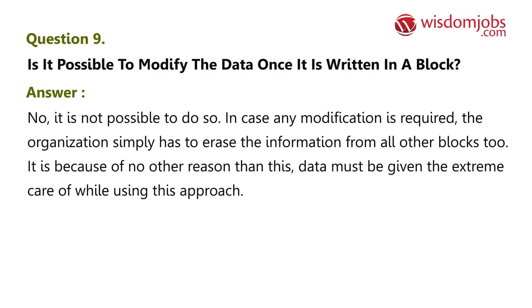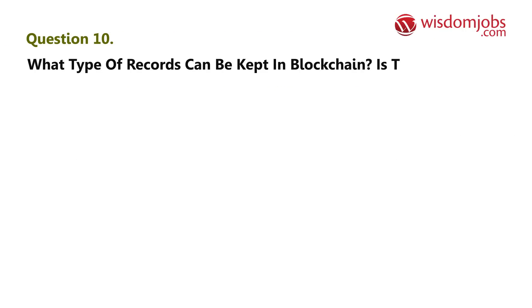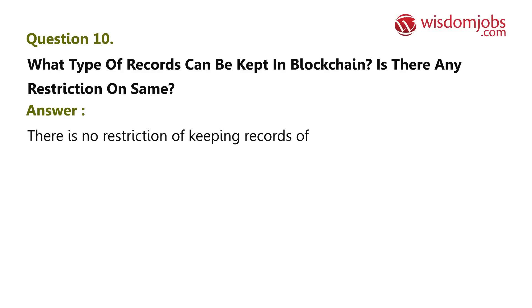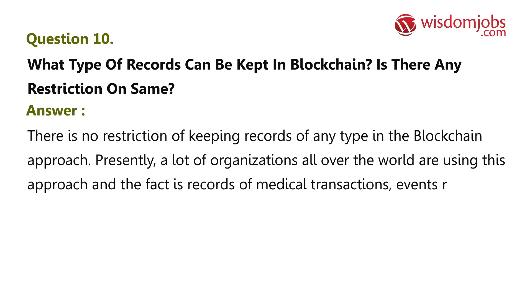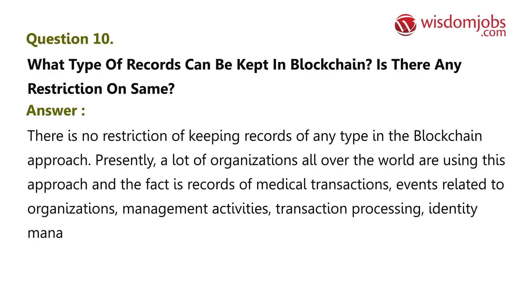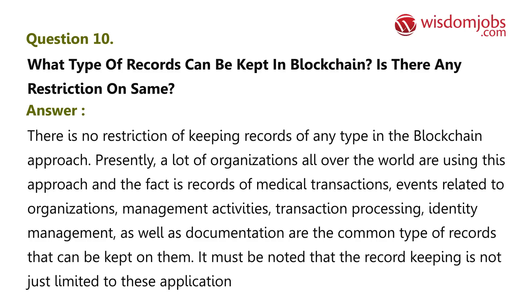Question 10: What type of records can be kept in blockchain? Is there any restriction? Answer: There is no restriction on keeping records of any type in blockchain. Presently, many organizations all over the world are using this approach. Records of medical transactions, events related to organizations, management activities, transaction processing, identity management, and documentation are common types of records that can be kept. The record keeping is not limited to these applications only.